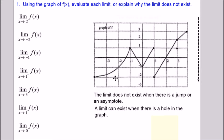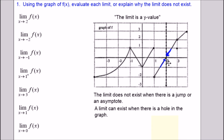For the first one we're looking for the limit as x approaches 2. Remember the limit is a y value, so we should ultimately be looking at the y-axis. Going into the neighborhood of 2 and looking from the left side and the right side, we can see the graph is heading towards the x-axis, which means a height of 0. So the limit as x approaches 2 is 0.